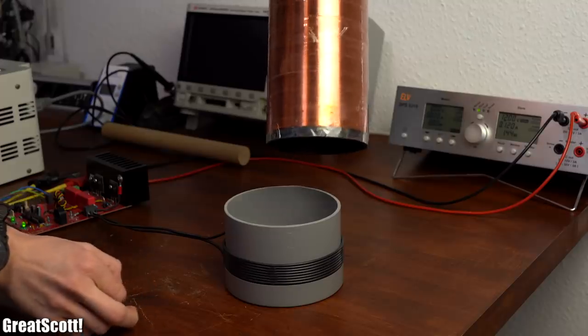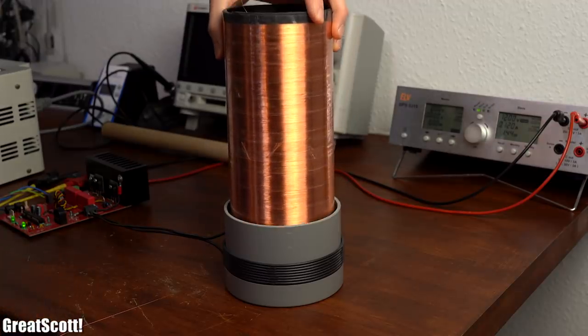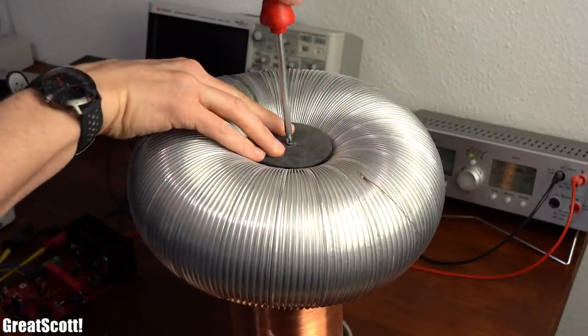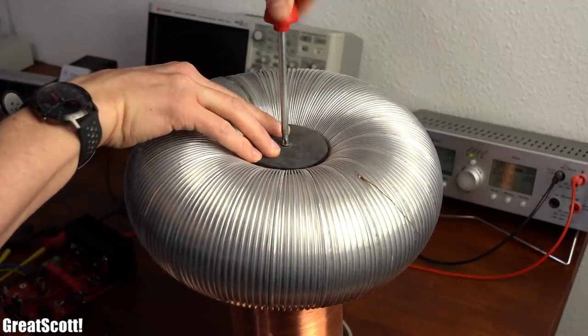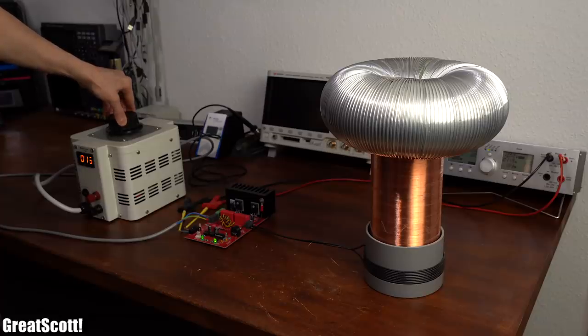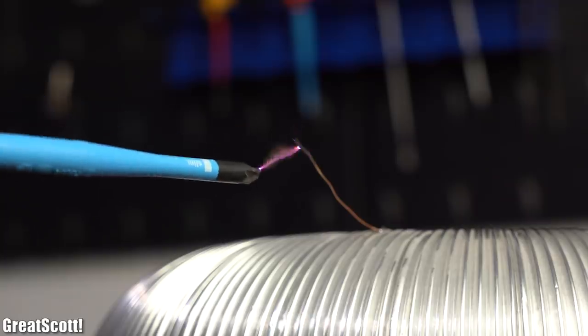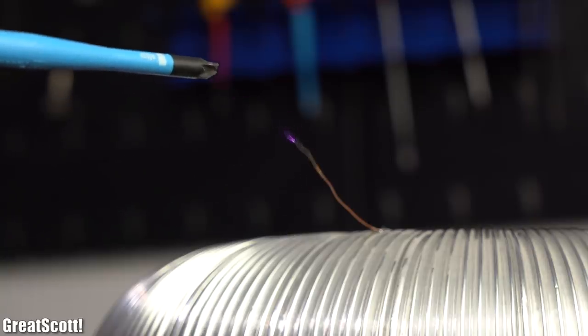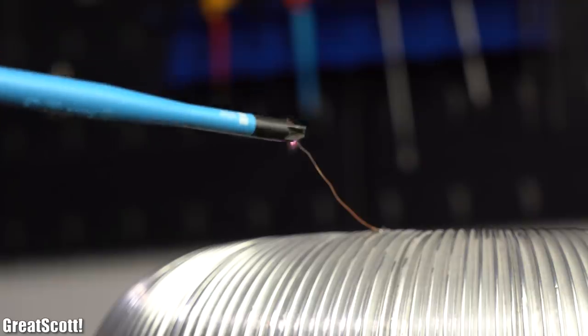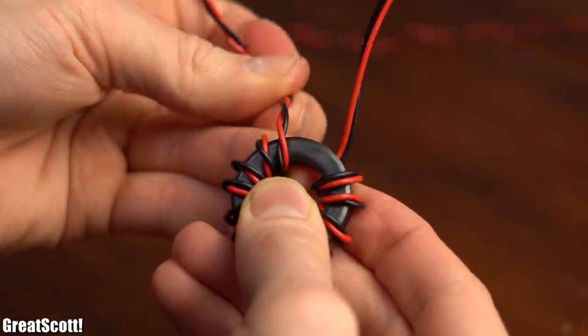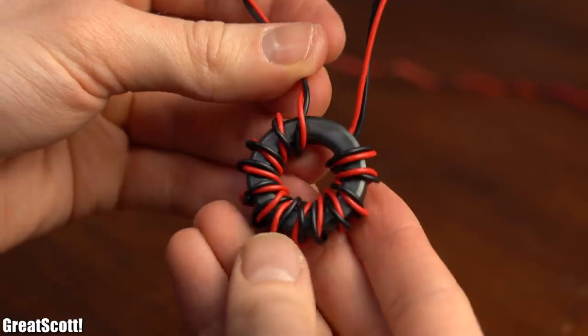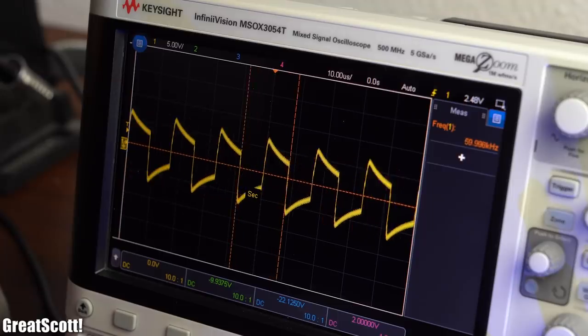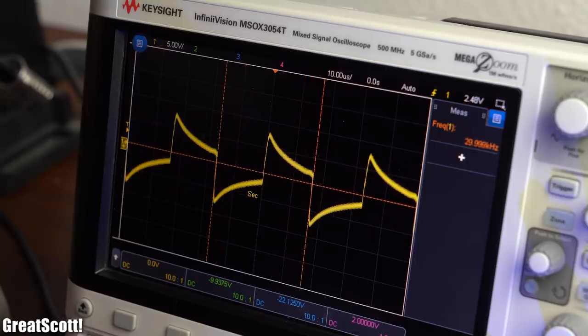Now let's get back to the initial question whether the driver with gate drive transformer is responsible for the better performance of the new Tesla coil. And my answer is that there is a big possibility because as you can see my old Tesla coil does in fact perform quite a bit better with the new driver. And with that being said I hope you enjoyed this video about gate drive transformers which means that now you should be familiar with all the basics when it comes to driving MOSFETs.